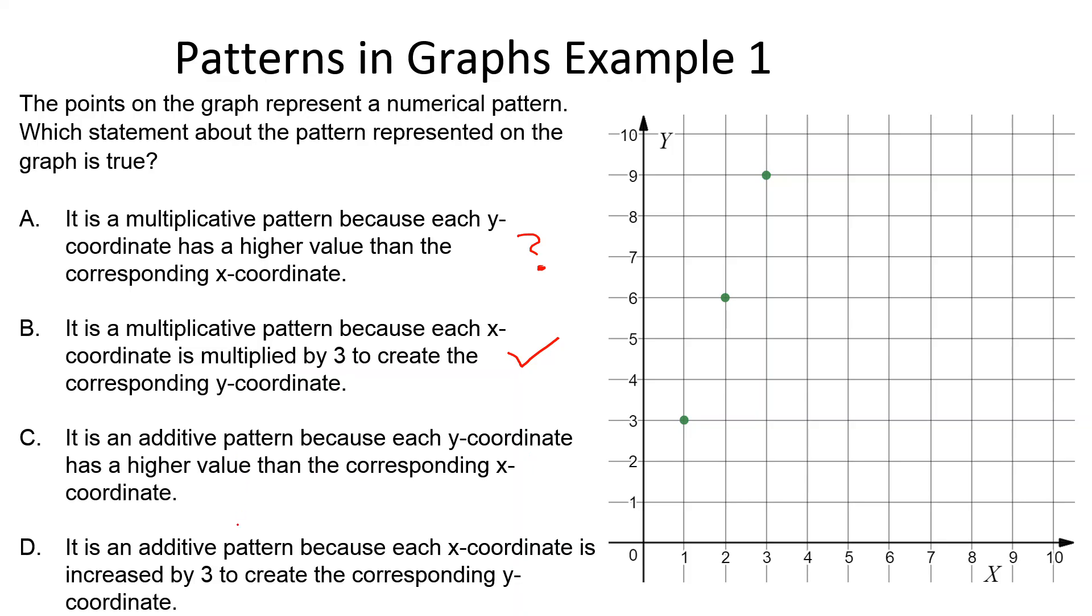I'm going to read the rest of the answer choices to make sure there's not something more correct. C: It is an additive pattern because each y coordinate has a higher value than the corresponding x coordinate. We realized it is not an additive pattern, so it cannot be C. D: It is an additive pattern. We also know it can't be D, so it's either A or B. The more correct answer is B because we know it's a multiplicative pattern because we multiply the x values by 3 to get the y values.